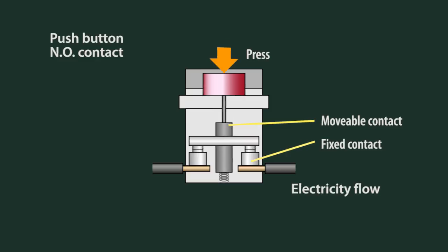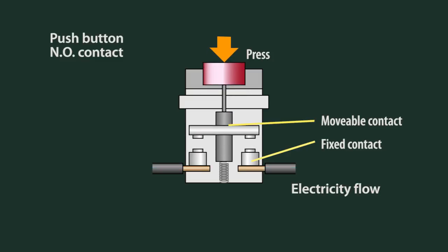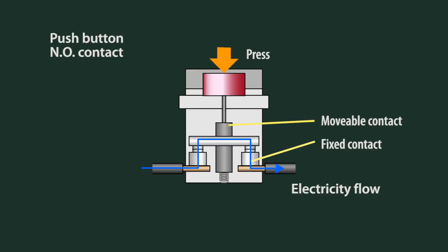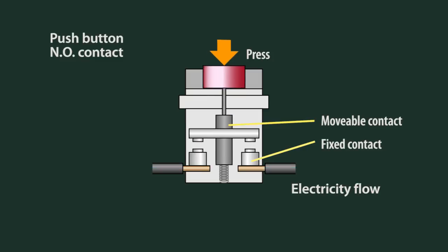If I make the analogy of Normally Open Contact to a push button, a spring normally keeps the contact in open position and electricity will not flow. When the push button is pressed, the contact will close and electricity will flow. When the button is released, the contact is open again.